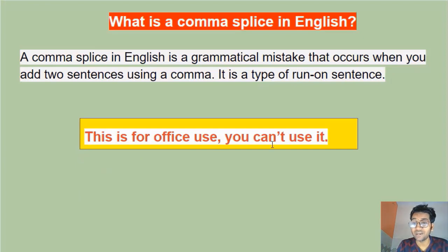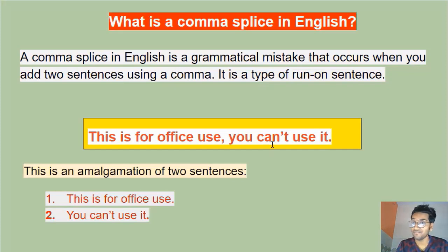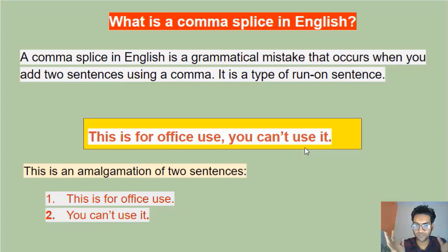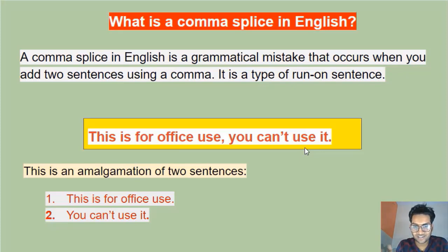Here's an example: 'This is for office use, you cannot use it.' We have two independent clauses — number one: 'This is for office use,' and number two: 'you cannot use it.' Both sentences can stand alone, but we've brought them together using a comma, which is a mistake because a comma is not capable of joining two sentences together.